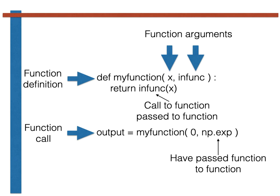Critically however, we can change the function that is evaluated within the calling code. If we pass np.sign in place of np.exp as shown here, output will now be set equal to 0 as the sign of 0 is 0 and not 1.